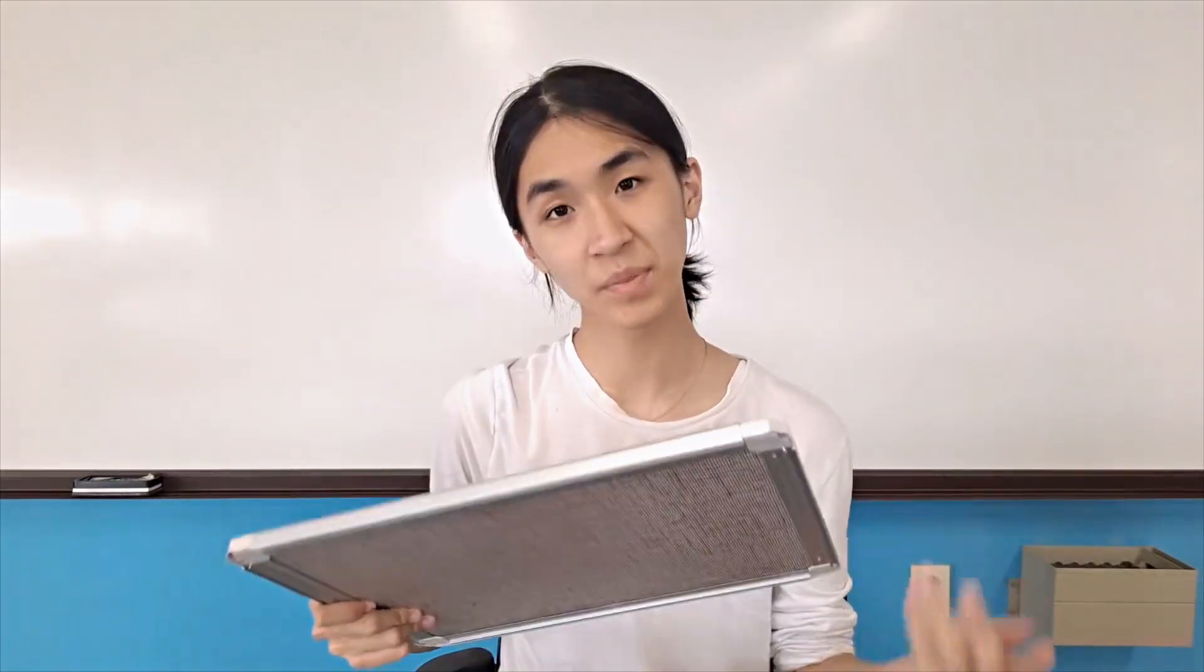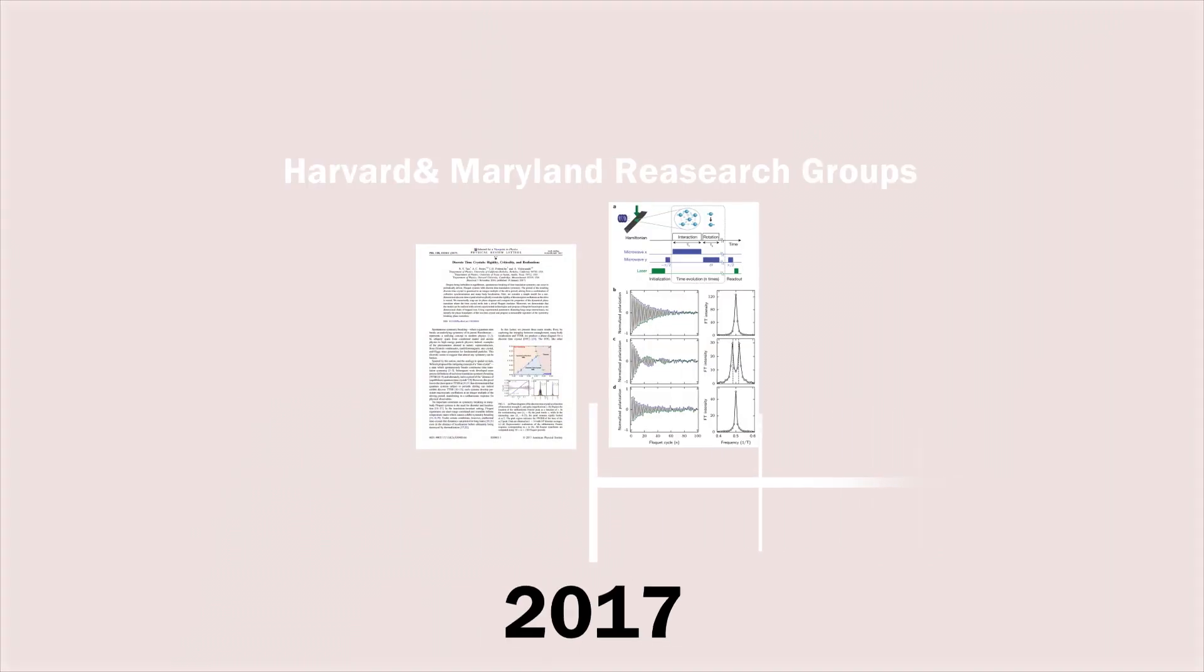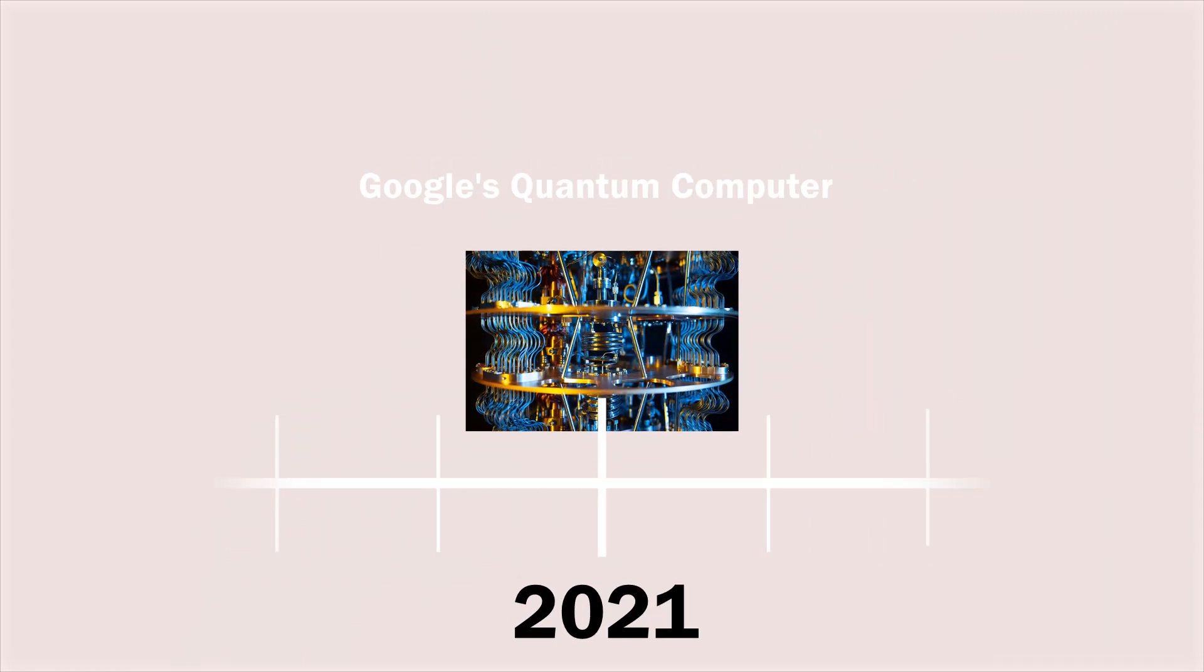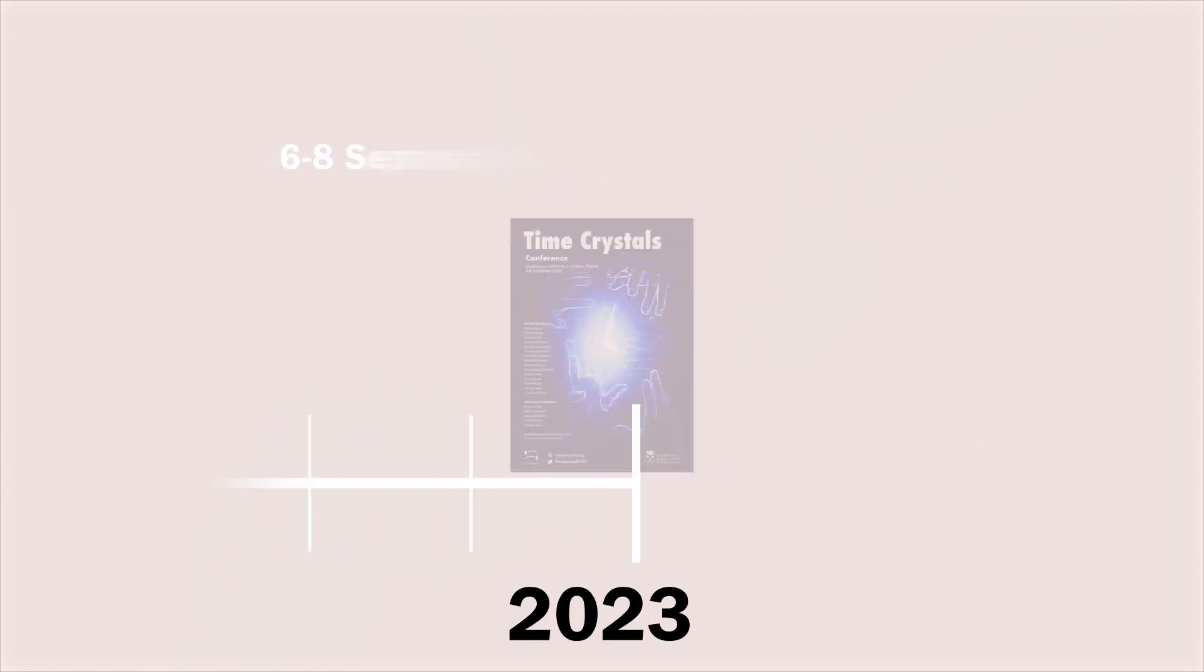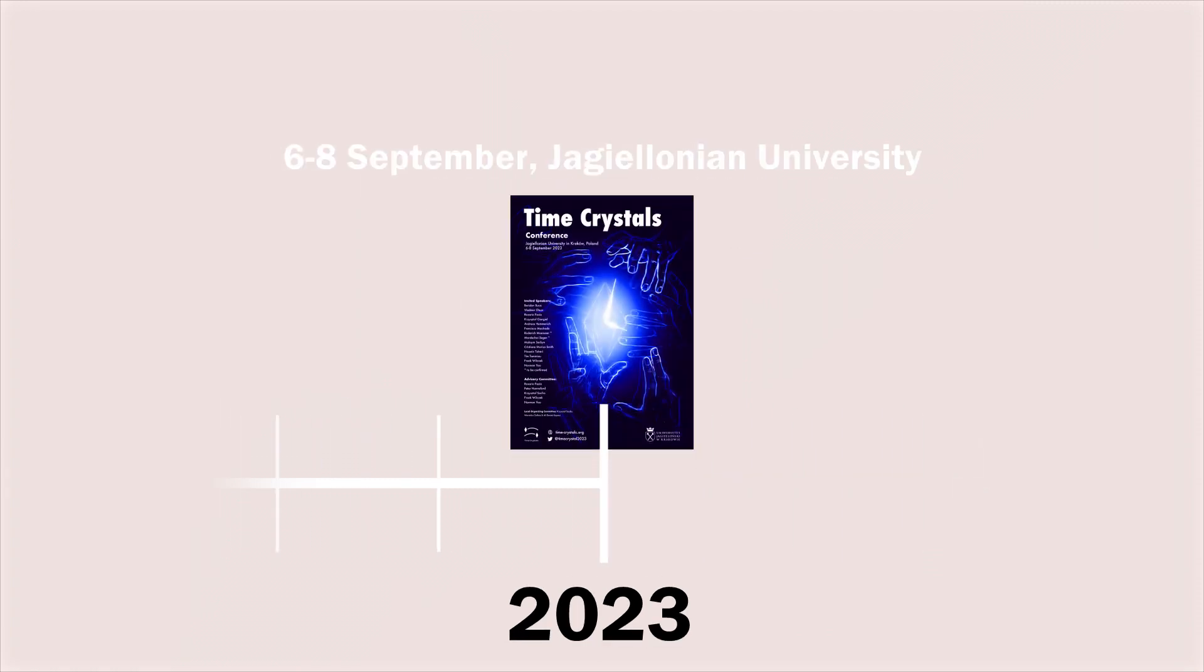But the most interesting thing is the speed of the development. The first ever observations of time crystals was in 2017 by two universities, but then an actual simulation was made just four years later. Even this September, there's a major conference planned for time crystals. The theory only started a decade ago, but how far we came in time is crazy.